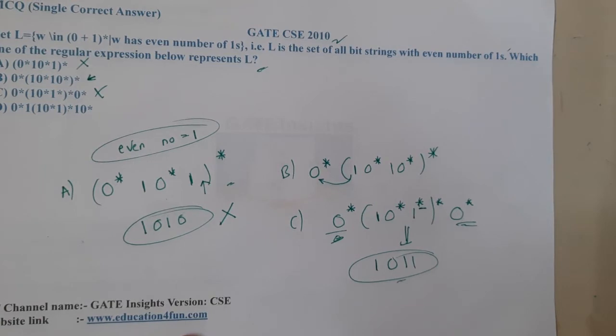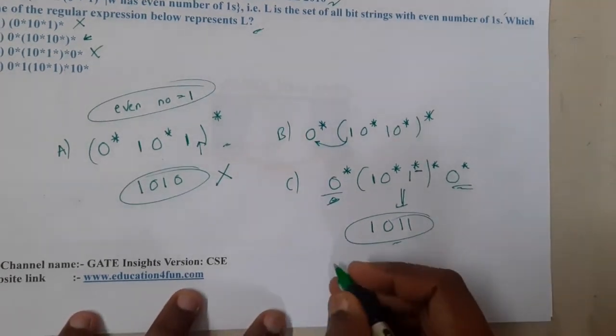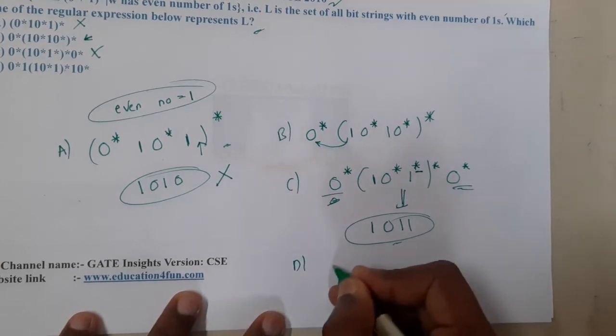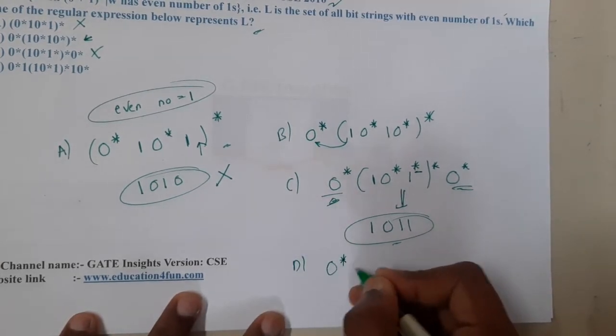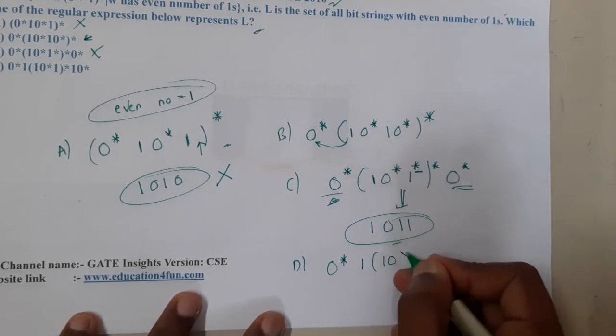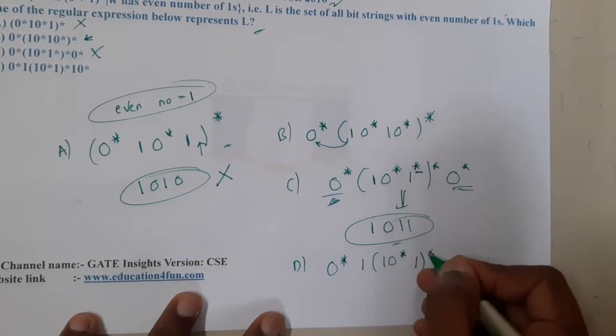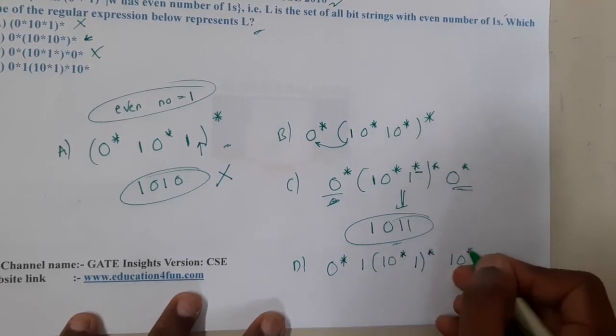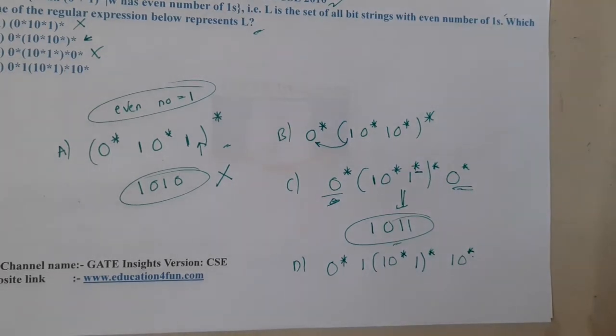Moving on to D. In D: 0*1(10*1)*10*. Now if you observe this option carefully, is there any kind of issue with this? I think this option also seems to be okay. Can I generate a double one here? I can generate.